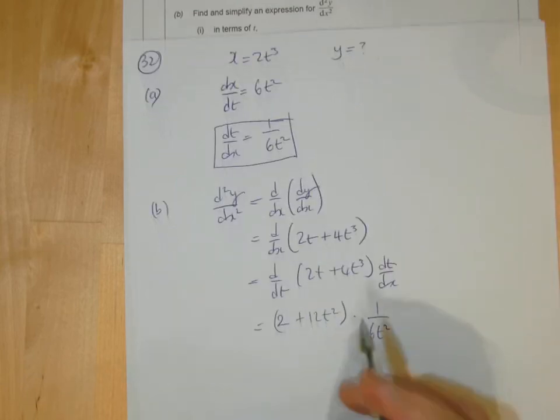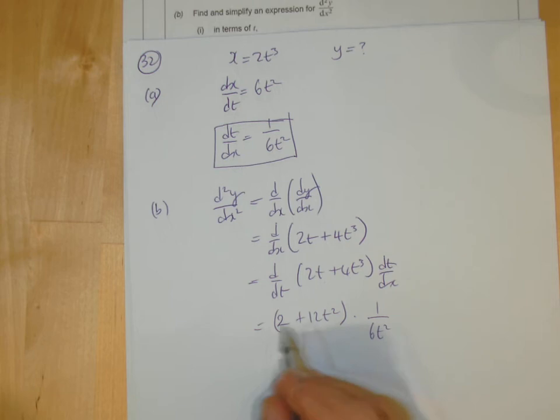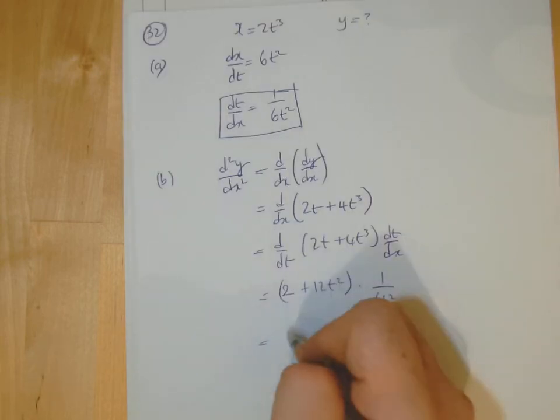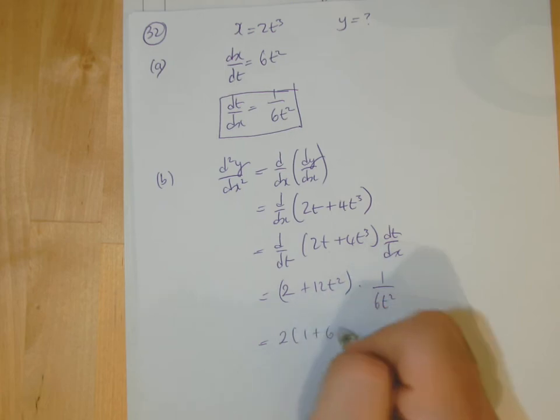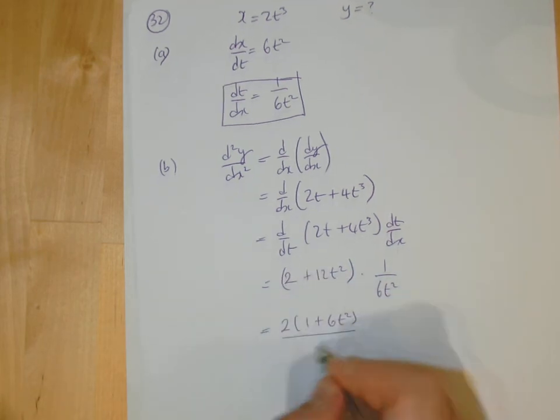So differentiate this. It's nice and easy, and that becomes 2. And that becomes 12t squared. And then dt dx, as we've seen, is 1 over 6t squared. So you get this out. Now straight away here, I can sort of see that you can take out a 2 here, can't you?